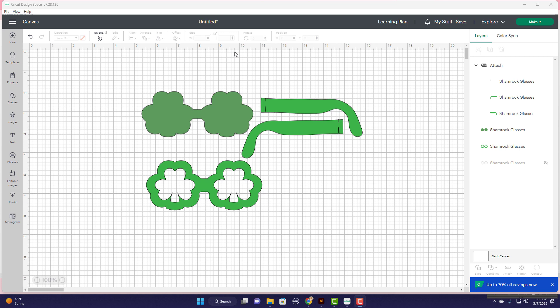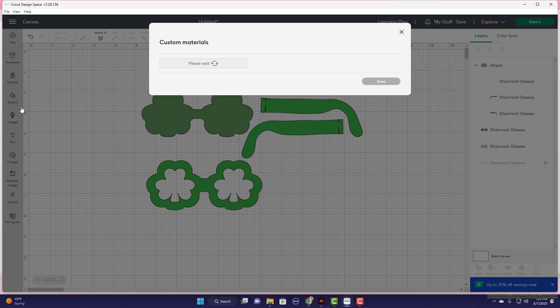Now the only other thing we have before we can go ahead and make these cute shamrock glasses is we need to add a setting to cut the cellophane. Cellophane is really tricky, it can tear very easily and there is no setting in your Cricut that optimally handles this right now. So what we have to do is come up here to the hamburger menu, come down to manage custom materials.